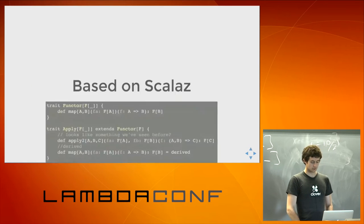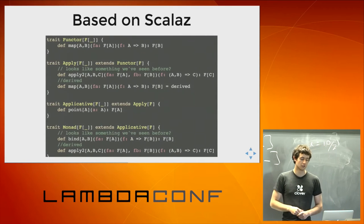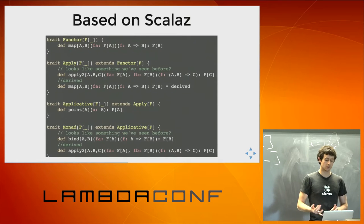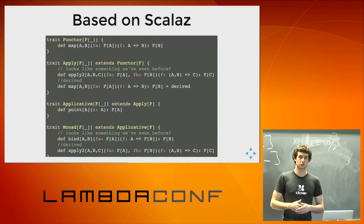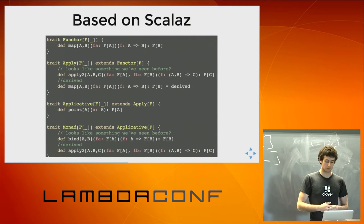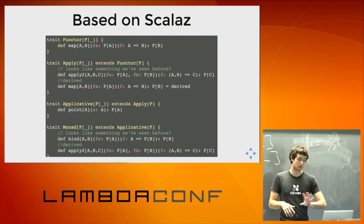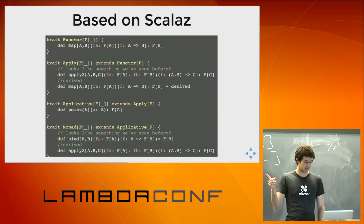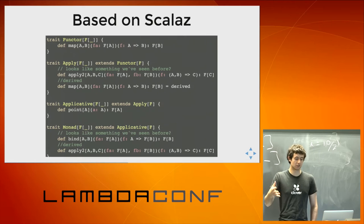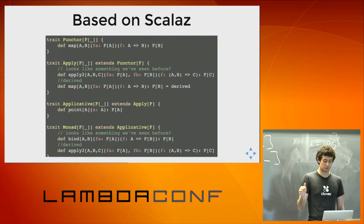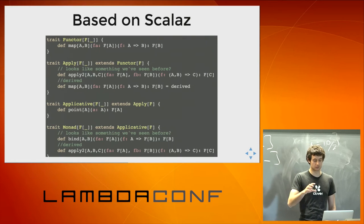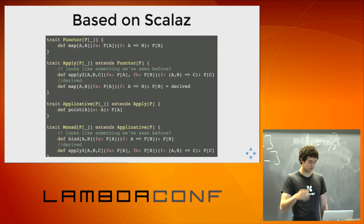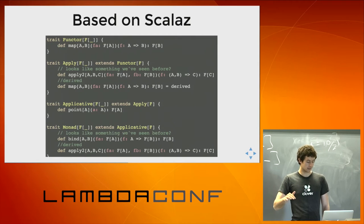So how does it work? It's based on ScalaZ, which defines a hierarchy of type classes: Functor, Apply, Applicative, Monad — essentially based on the type classes you'd find in Haskell. Functor has map; we don't really use Functor all that much. Apply is what's really interesting here. The signature of ap2 (apply2) is actually very similar to zip — it basically is zip — and ap2 is going to enable us to fail fast. You can derive map from ap2. Applicative in ScalaZ extends Apply and adds point. And Monad extends Applicative and provides bind, which is basically our flatMap — which cannot fail fast. You can derive ap2 from bind, but if you do that you won't be able to fail fast; you're losing flexibility in the implementation.